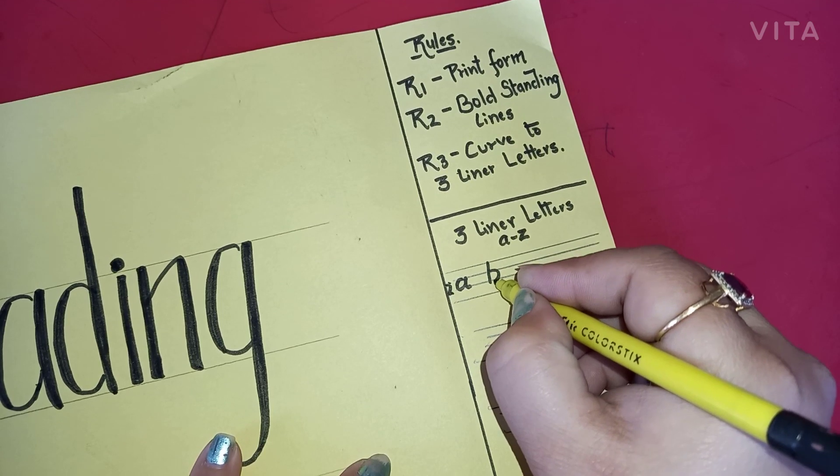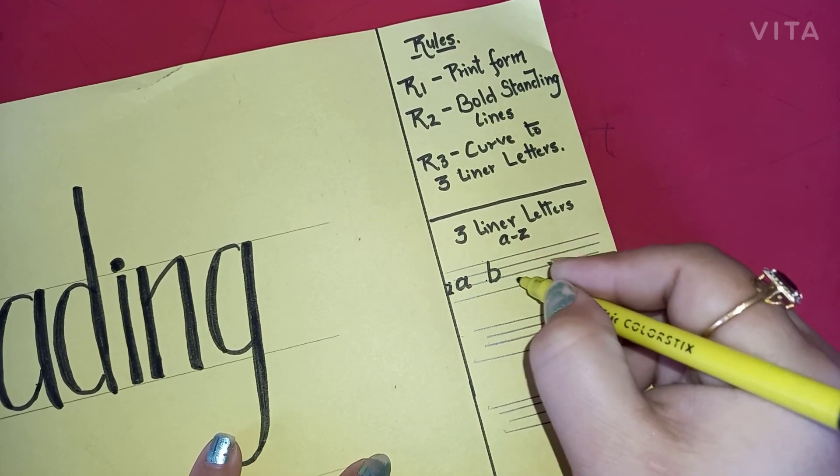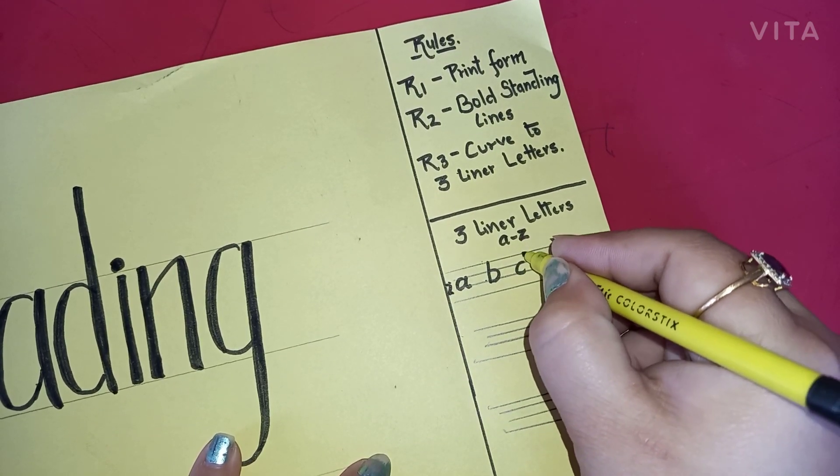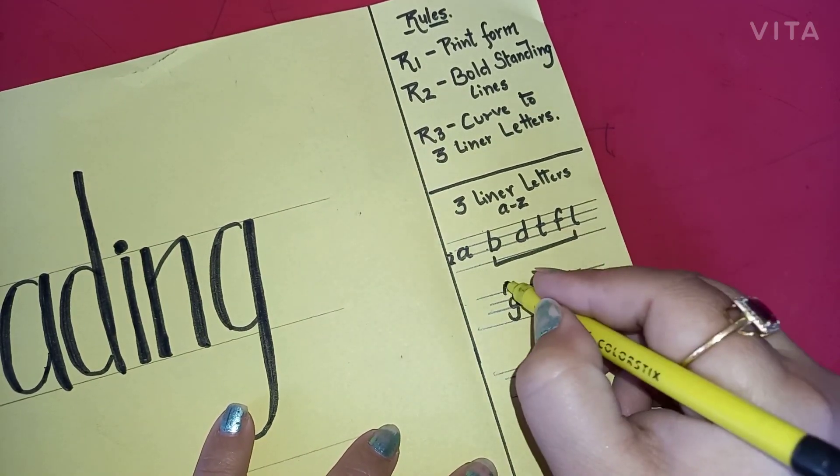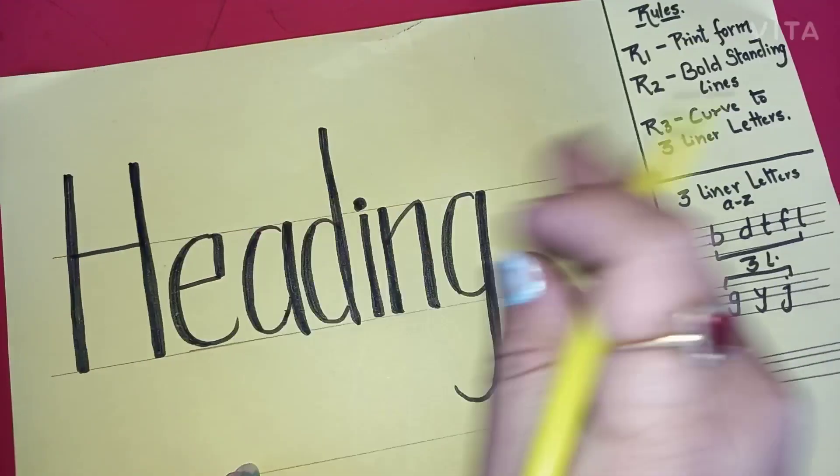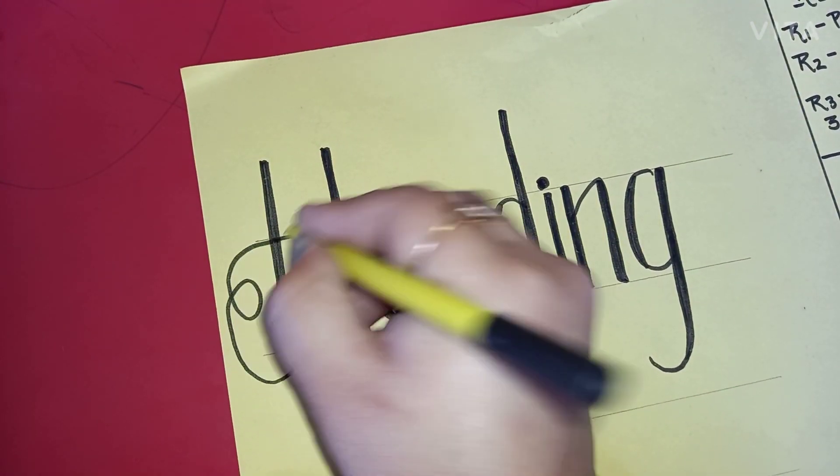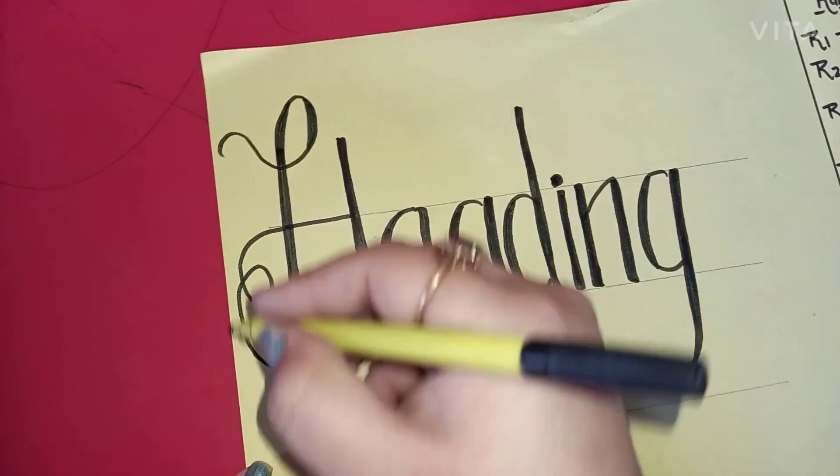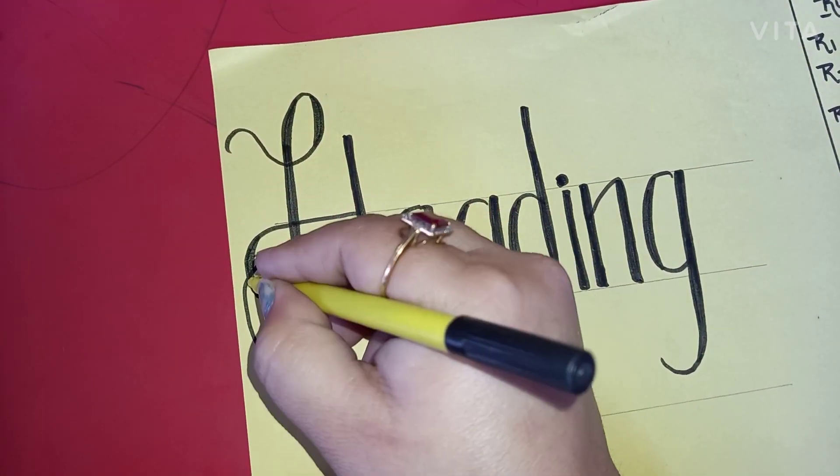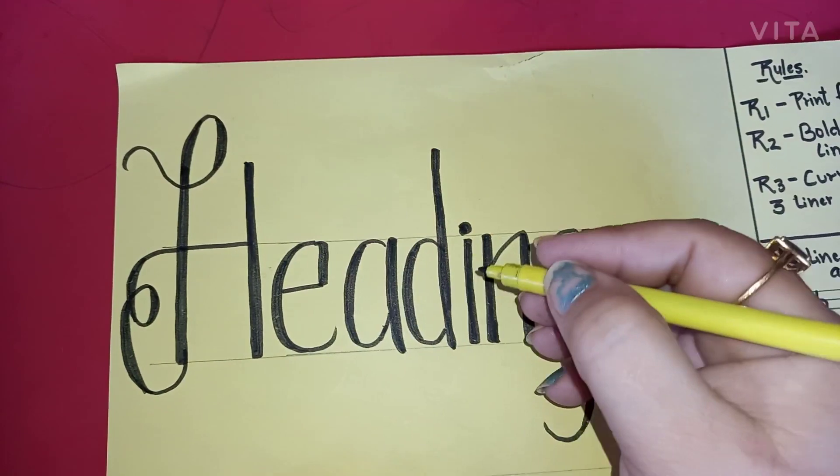And 'b' is coming in between three lines, so this is known as three-line letters. D, f, l, and even g, j, z are three-line letters. Now rule three: giving curve to the three-line letters. Here h, d, and g are three-line letters.